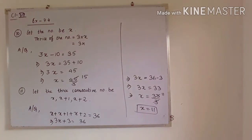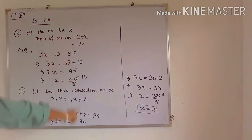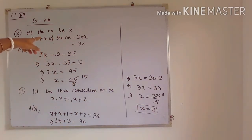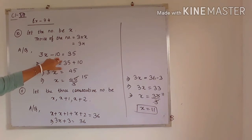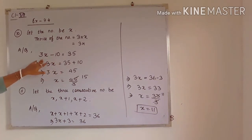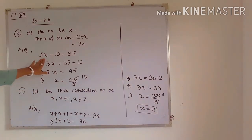Question number 10: If 10 is subtracted from thrice a number, we take the number as x. Thrice the number means 3 times of that number, which is 3x. According to the question, if 10 is subtracted from 3 times of that number, we will get 35. So our equation will be 3x minus 10 is equal to 35.